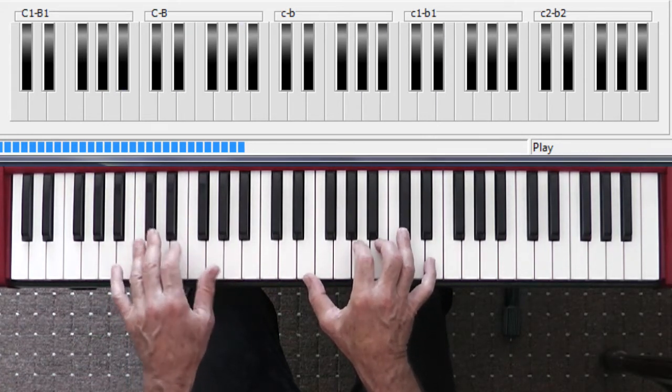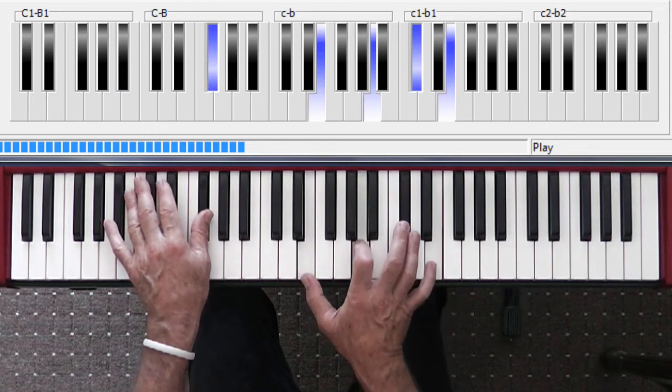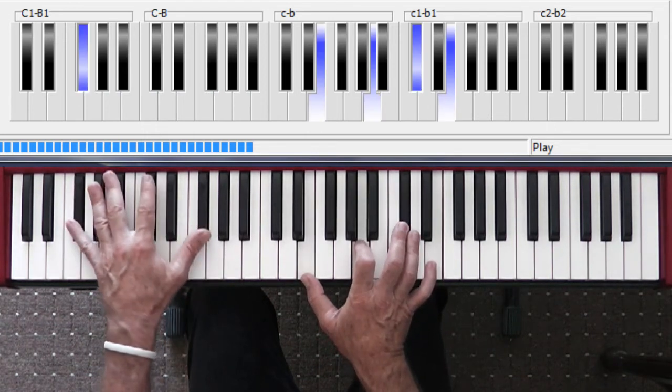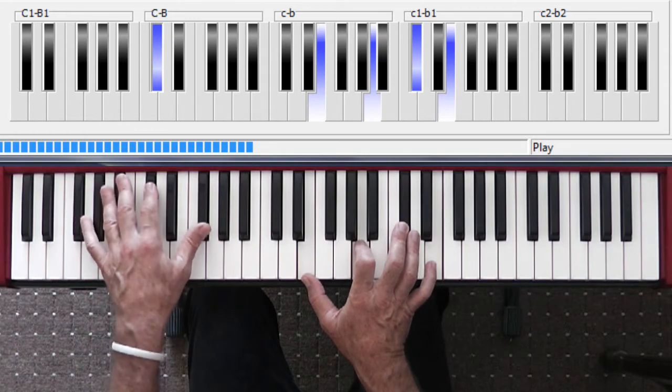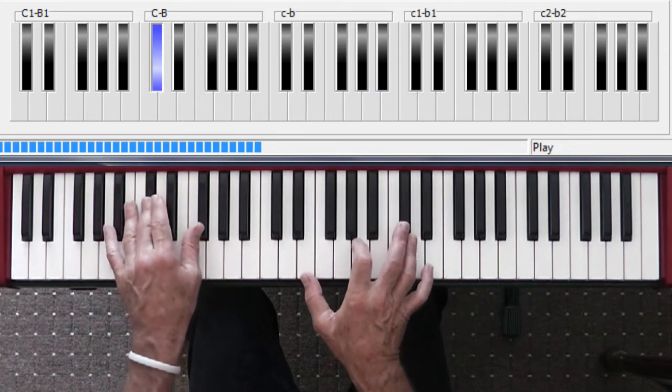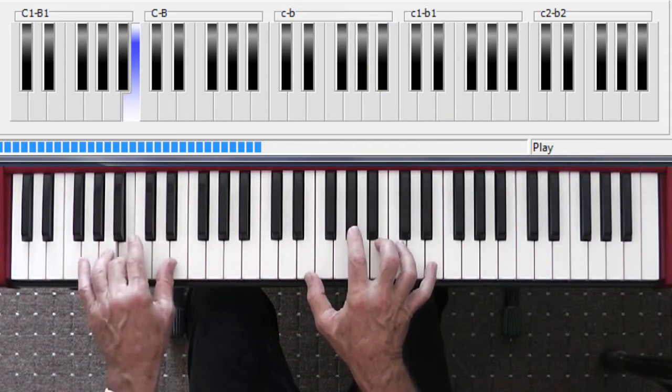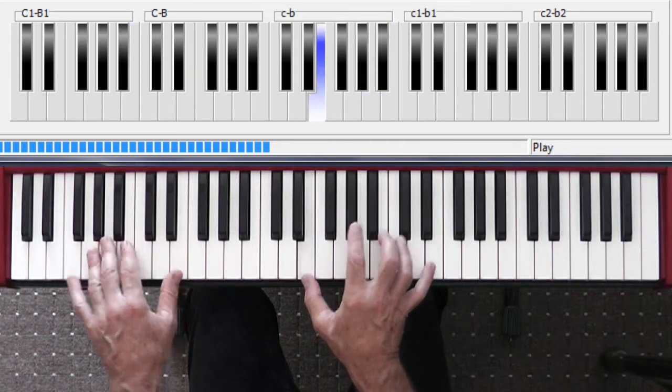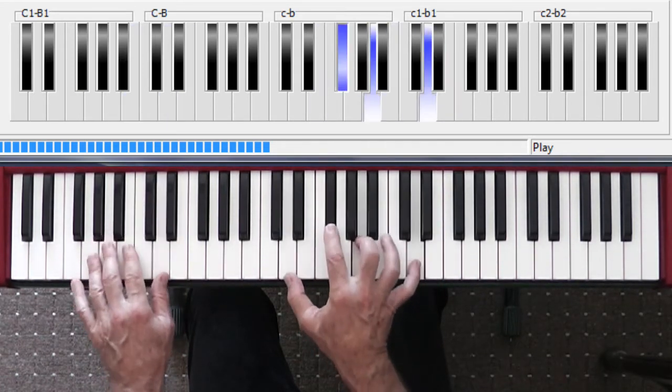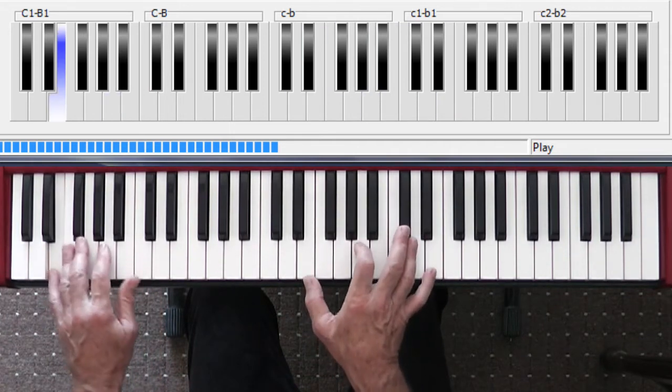Almost heaven. F sharp. And C sharp. West Virginia. E, the one and the five. E and a B. And a D and an A. And that puts you back on the A.